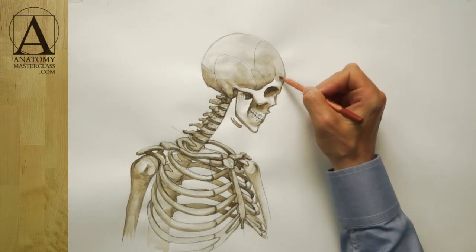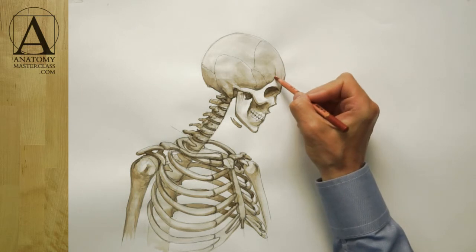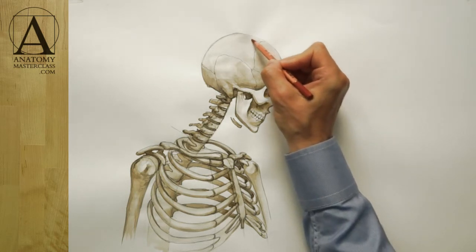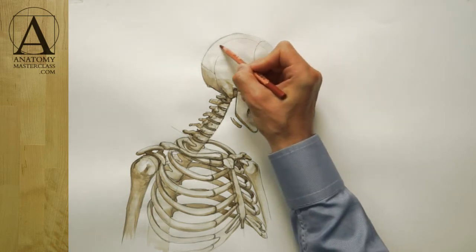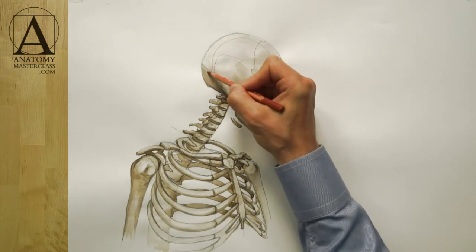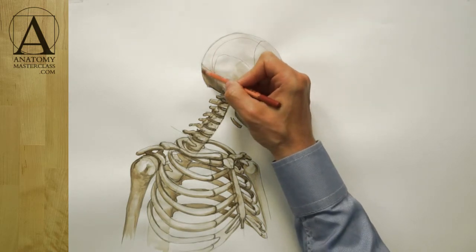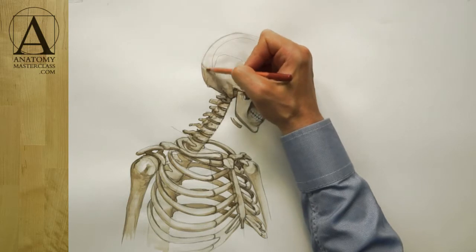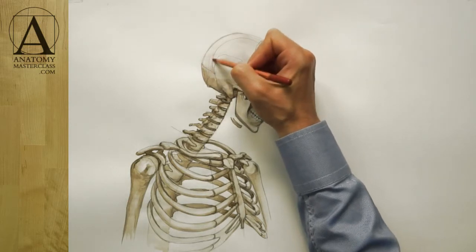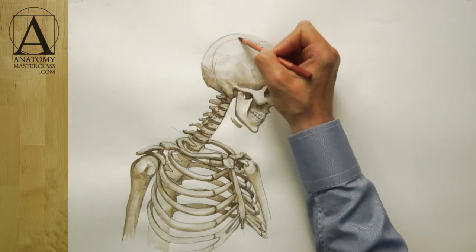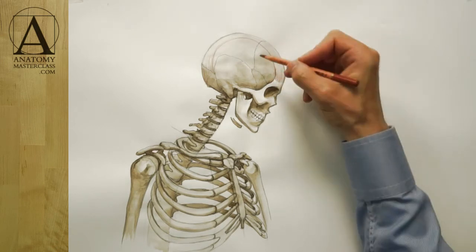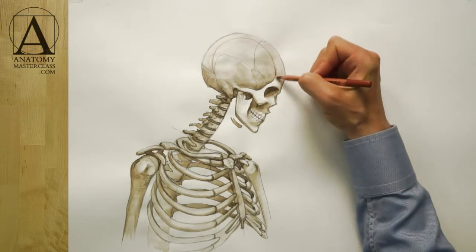The muscle of the forehead extends from the hairline to the brow ridge. This muscle is actually the frontal portion of a much bigger muscle that spans from the brow ridge to the back edge of the skull. Another portion of this muscle is located on the back of the head. Between these two portions, there is a wide, flat tendon that covers the entire top part of the skull.